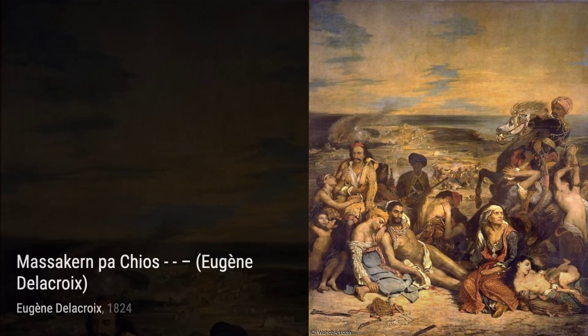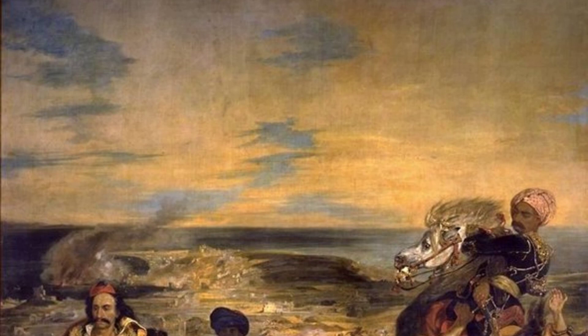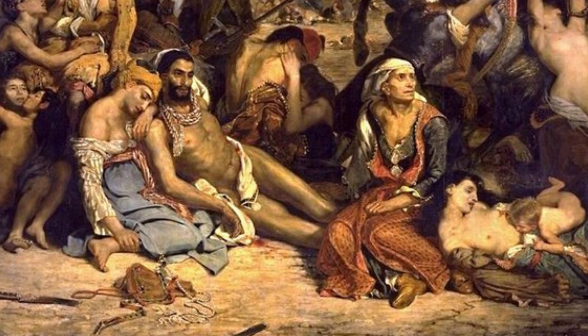Massacre at Chios is a powerful painting that depicts the tragic events of the Chios Massacre, showcasing Delacroix's ability to convey emotion and tell a story through his art.